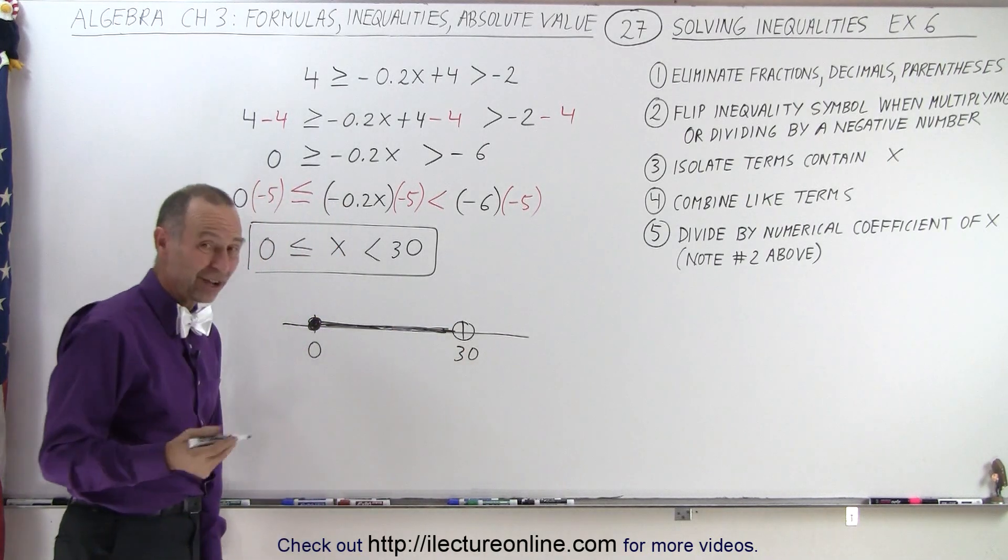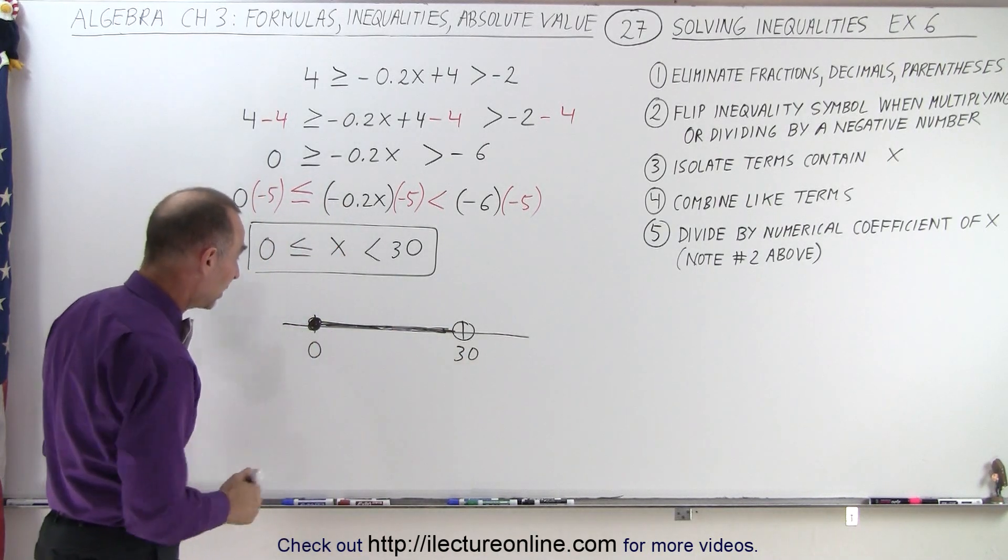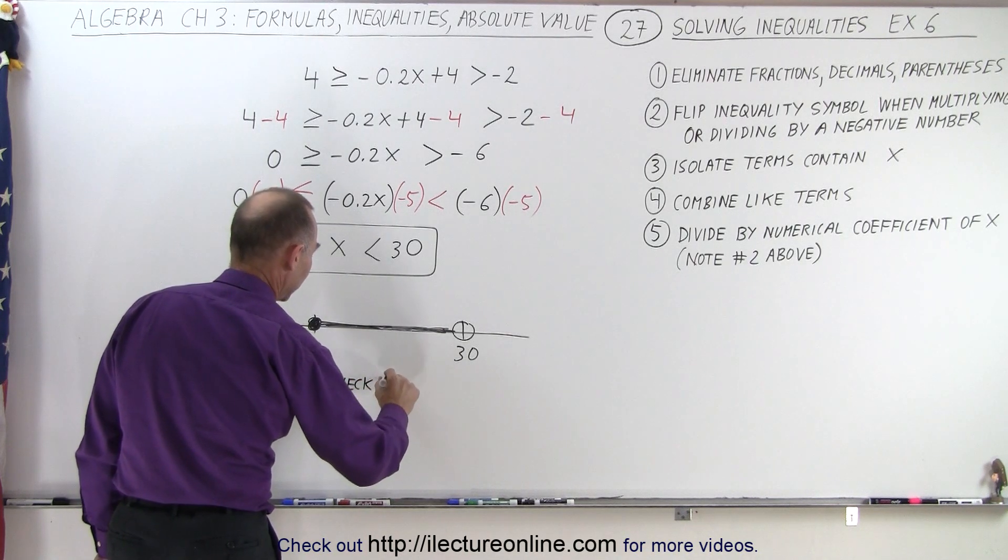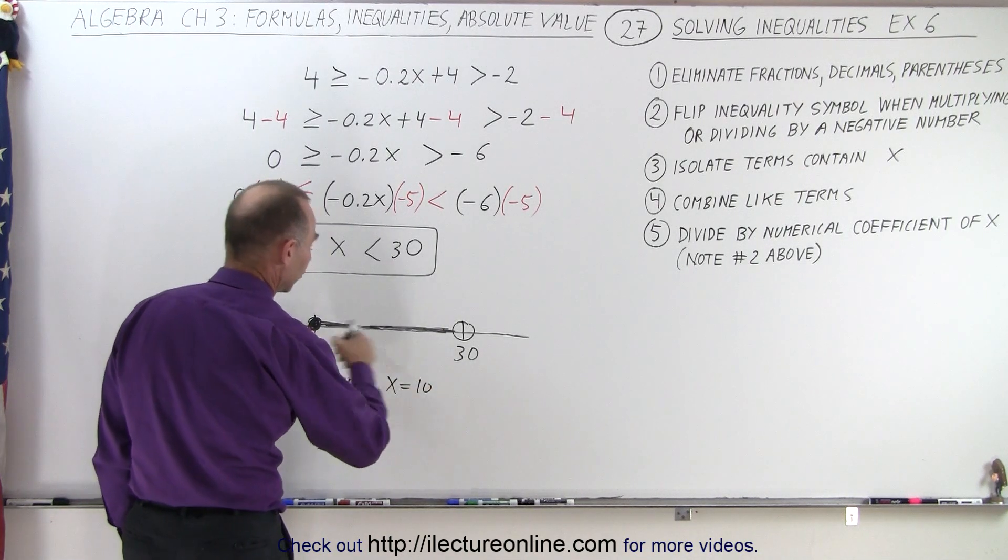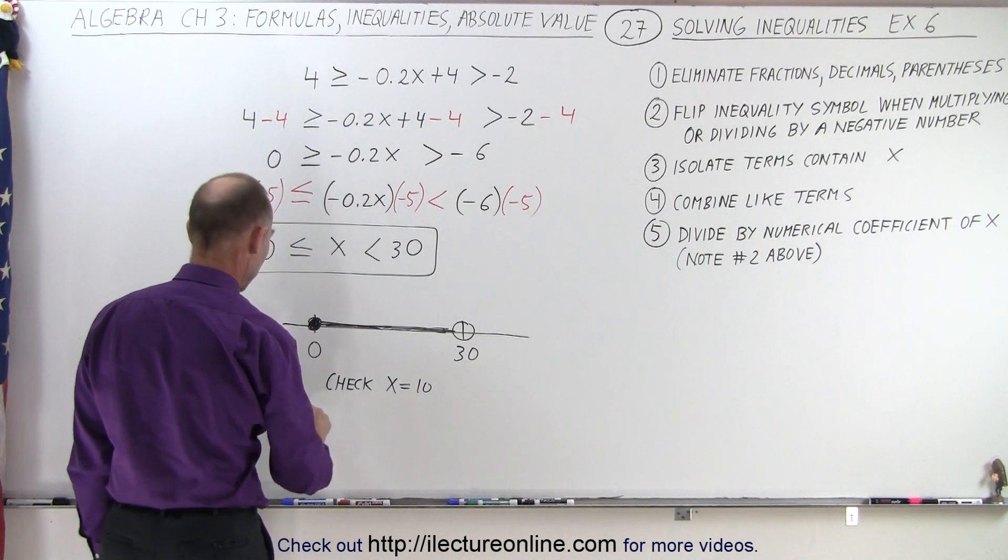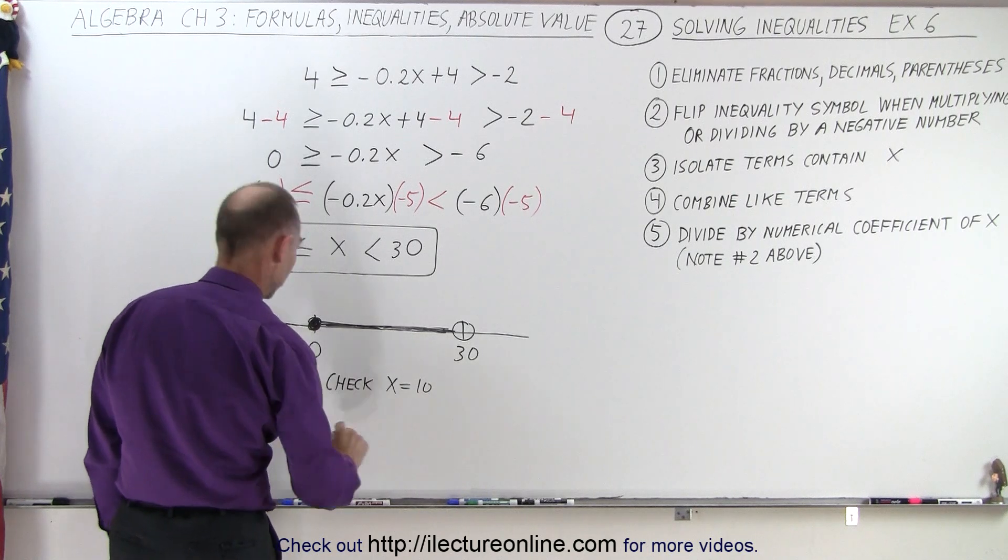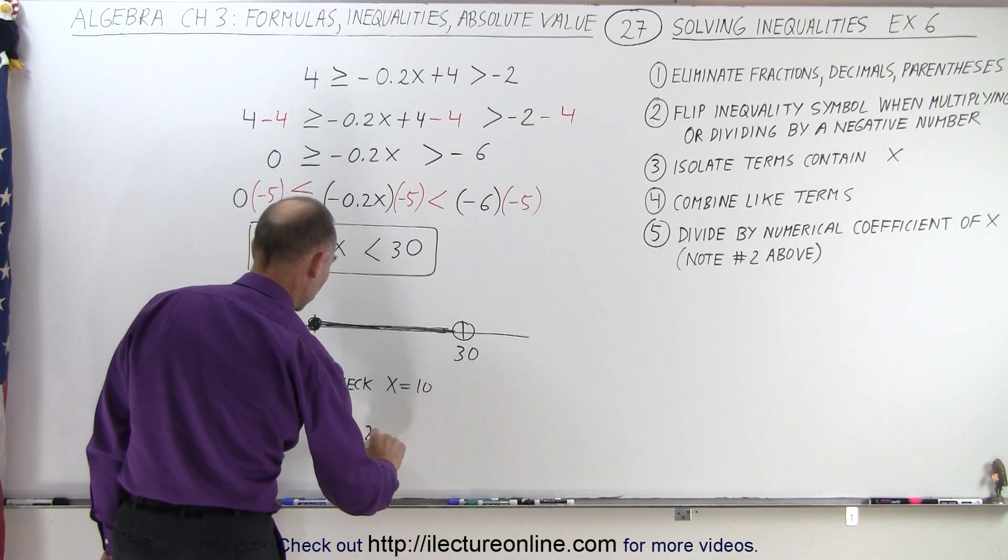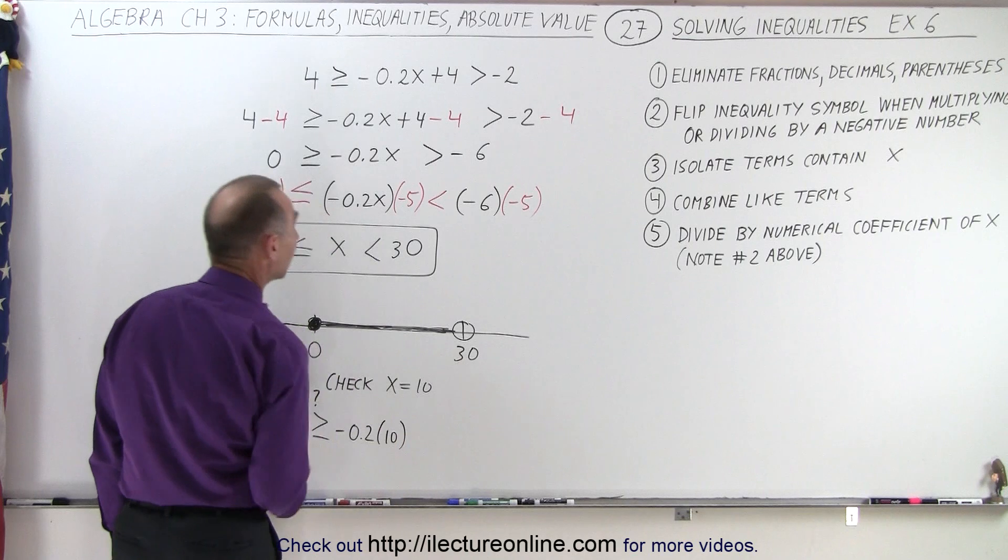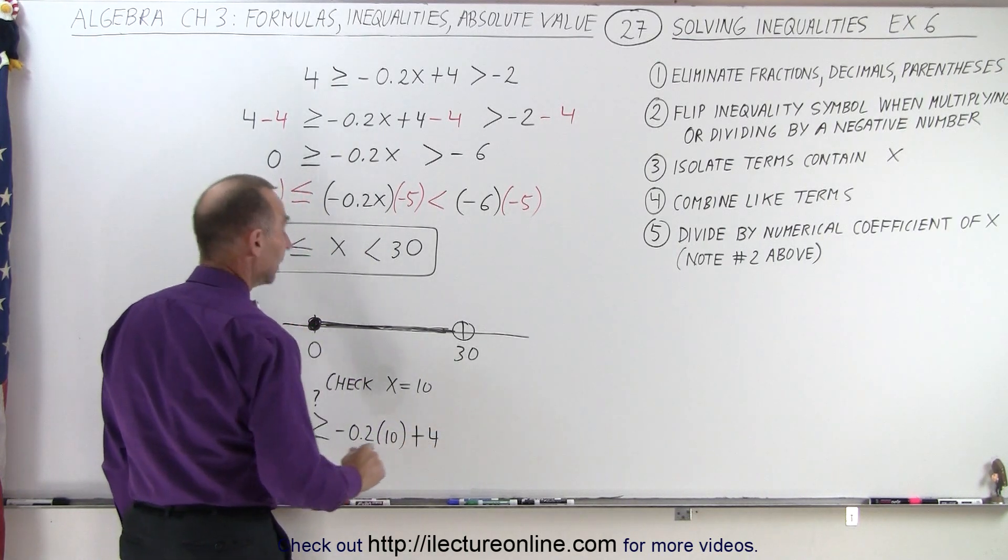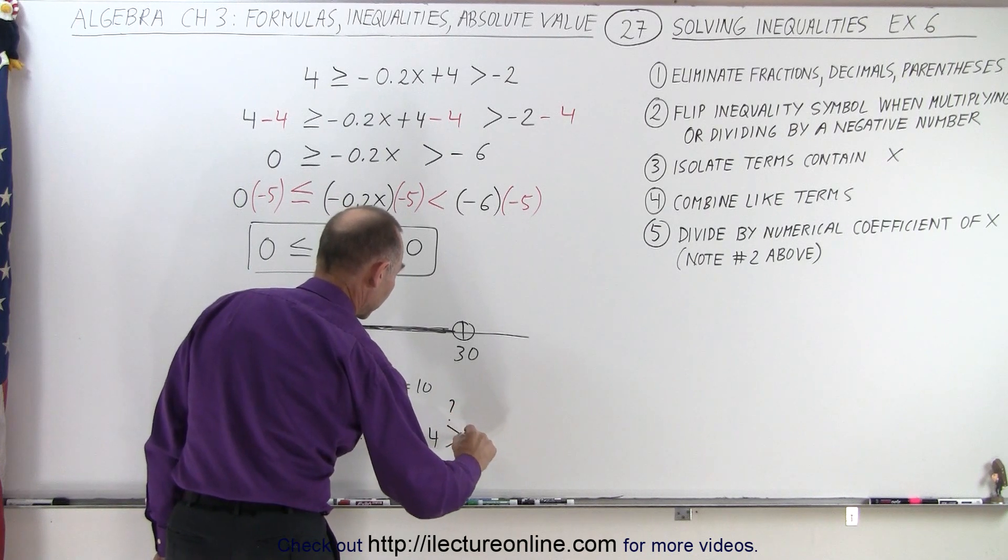Of course, we could do a quick check. We can pick a point somewhere in between. So let's check. Let's set x equals 10, which is one of the points in between. Then plug that in here and see what we get. So we end up at 4 greater than or equal to negative 0.2 times 10 plus 4, and then greater than negative 2.